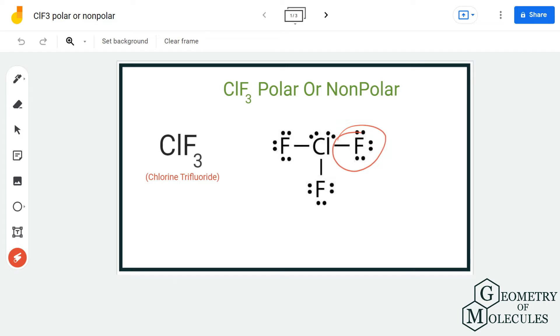Chlorine atom is forming three single bonds with fluorine atoms and has two lone pairs of electrons. This is the Lewis structure for ClF3. Now to find out its polarity, we are going to check the electronegativity values.